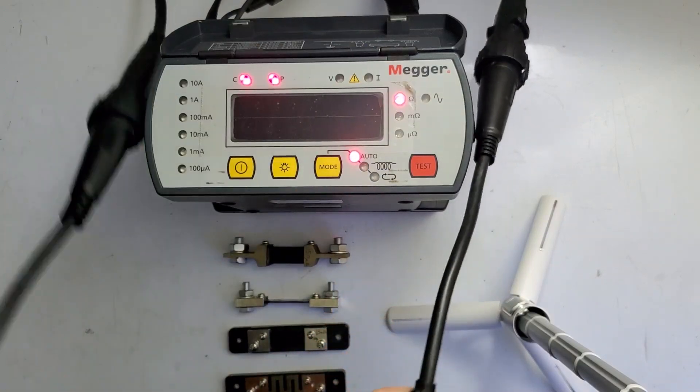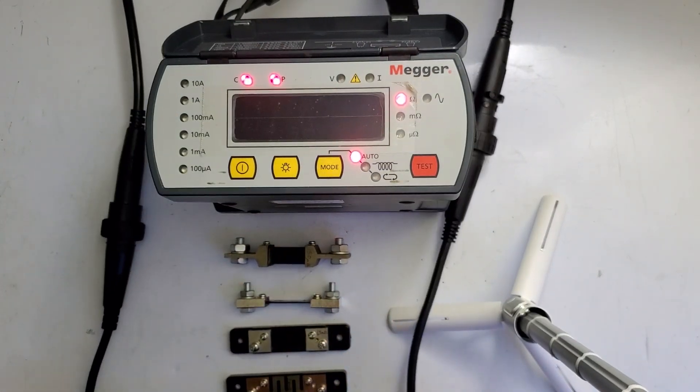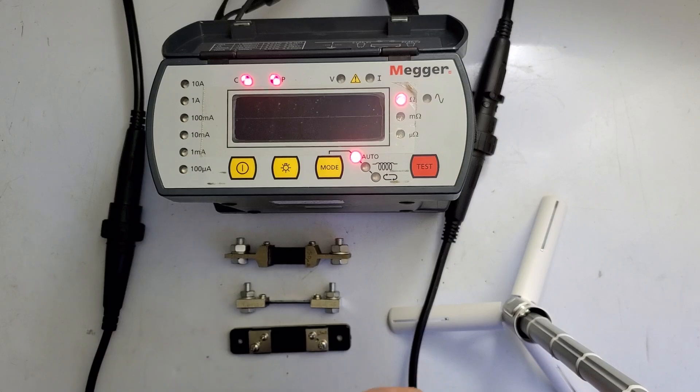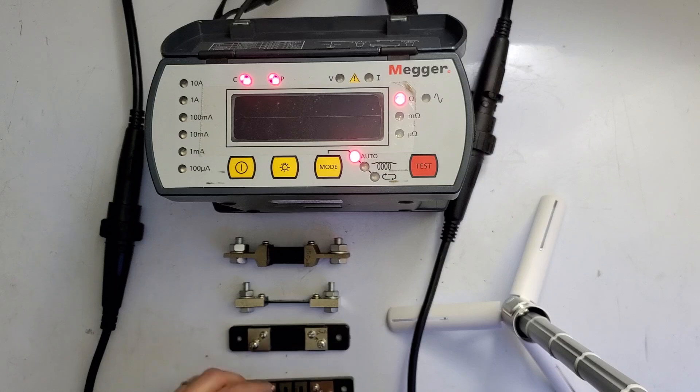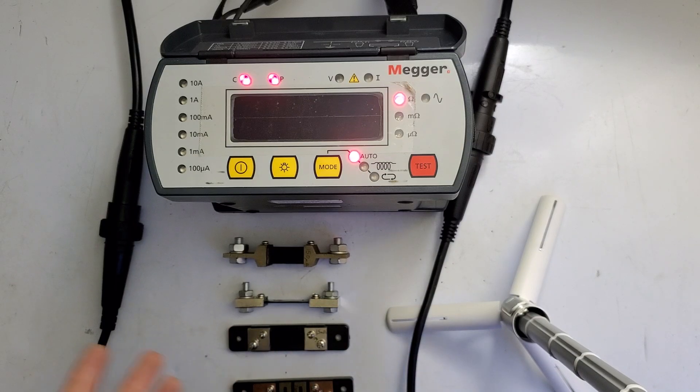For a DLRO, typically the best way to do a quick expedient self-check is to use a dead short and then some kind of known resistance if you have that available.